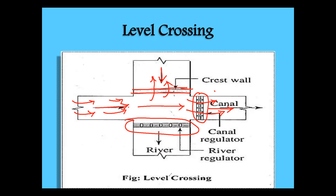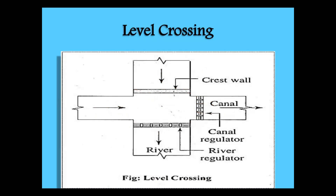The level crossing is used when the canal and stream are approximately crossing at the same level and the quality of water in the stream and canal does not differ much. In that situation, we construct a level crossing.